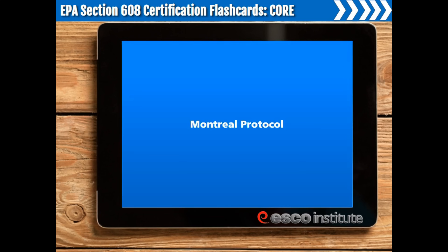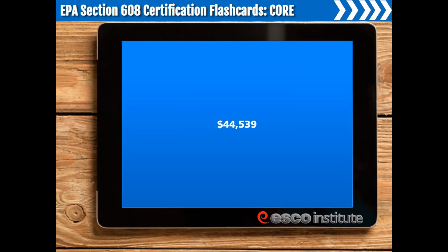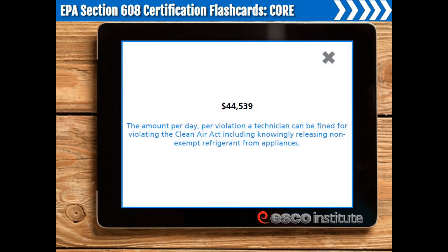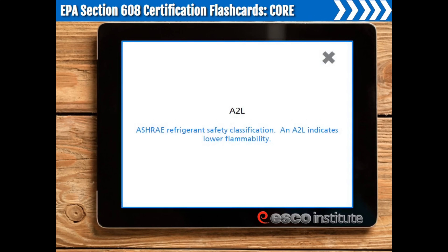Montreal Protocol. An international treaty that addresses ozone-depleting substances and their alternatives. $44,539. The amount per day, per violation, a technician can be fined for violating the Clean Air Act, including knowingly releasing non-exempt refrigerant from appliances. A-2L. ASHRAE Refrigerant Safety Classification. An A-2L indicates lower flammability.